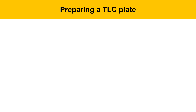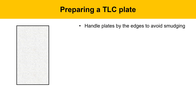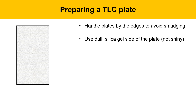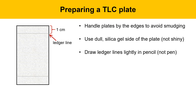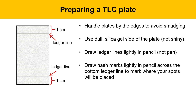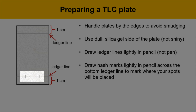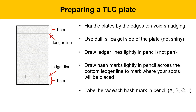To prepare a TLC plate, handle it by the edges to avoid smudging it. We'll be using the dull silica gel coated side — the shiny side is the plastic backing. Draw ledger lines lightly in pencil (not pen, because pen will smear) about one centimeter from the top and one centimeter from the bottom. Then draw hash marks lightly in pencil across the bottom ledger line to mark where your spots will be placed, and label below each hash mark — A, B, C, or another labeling system — to keep track of the spots.